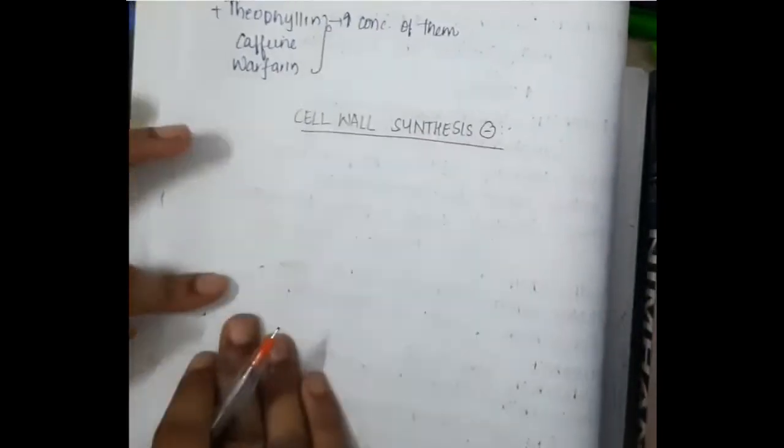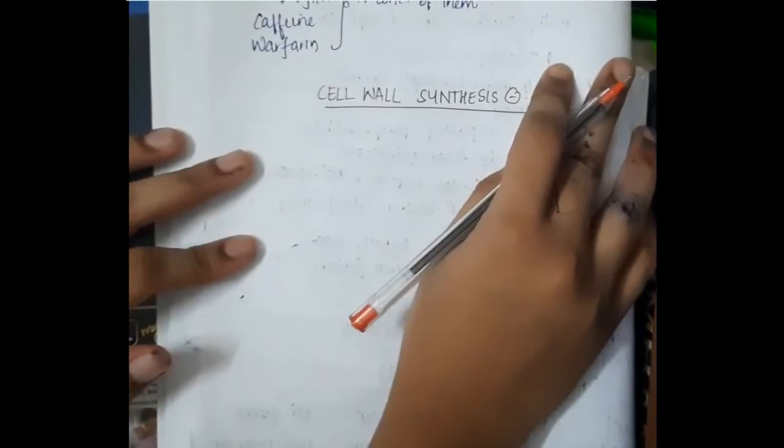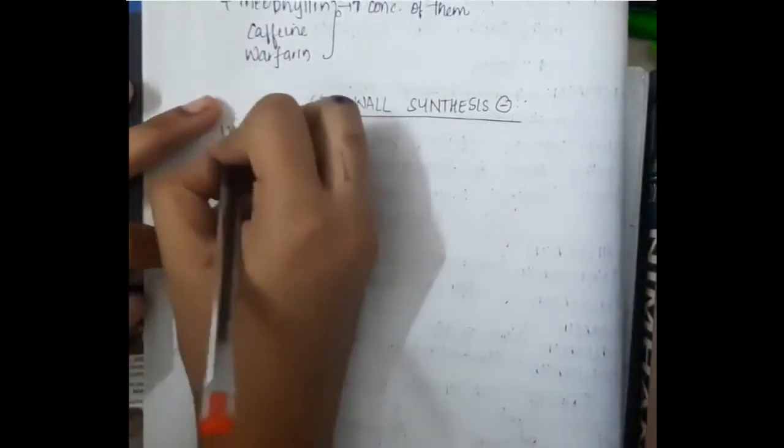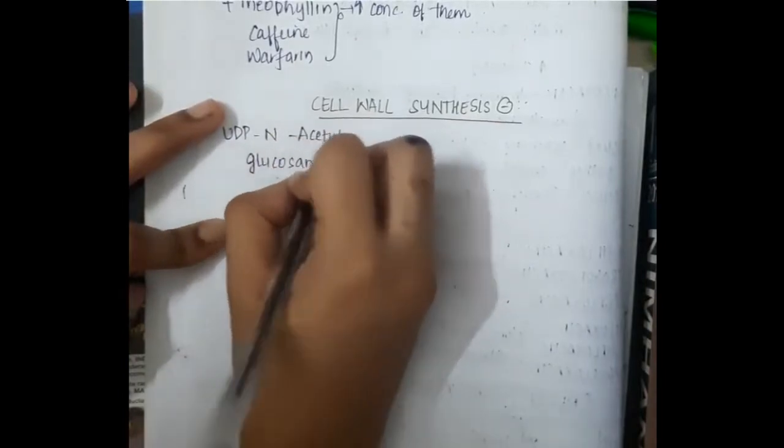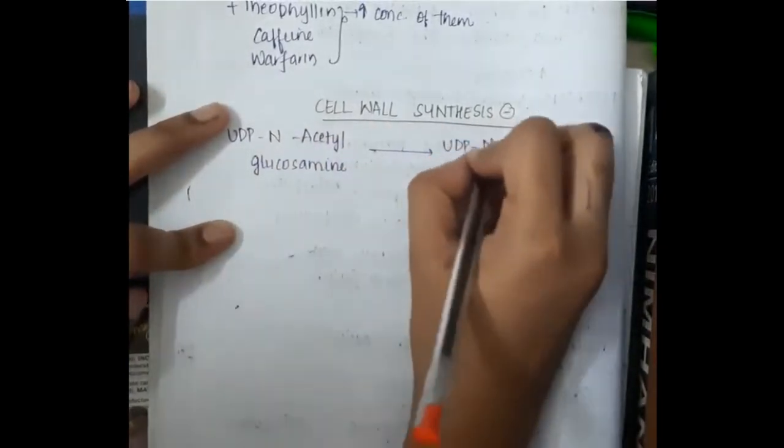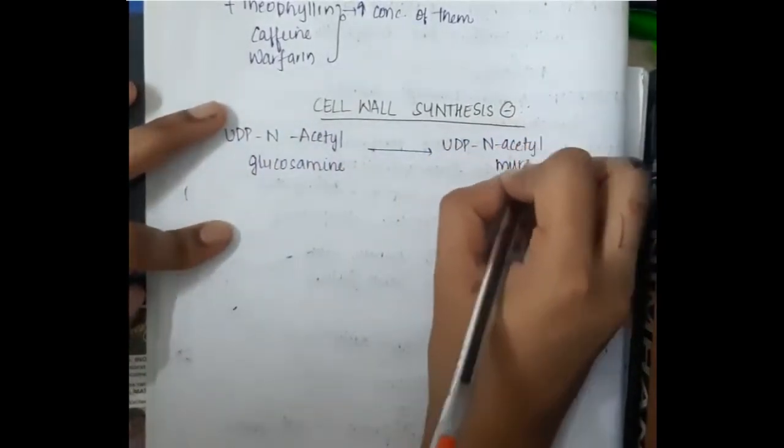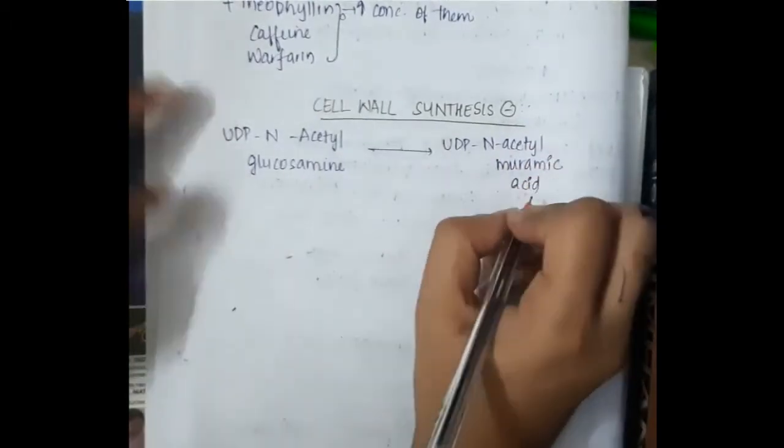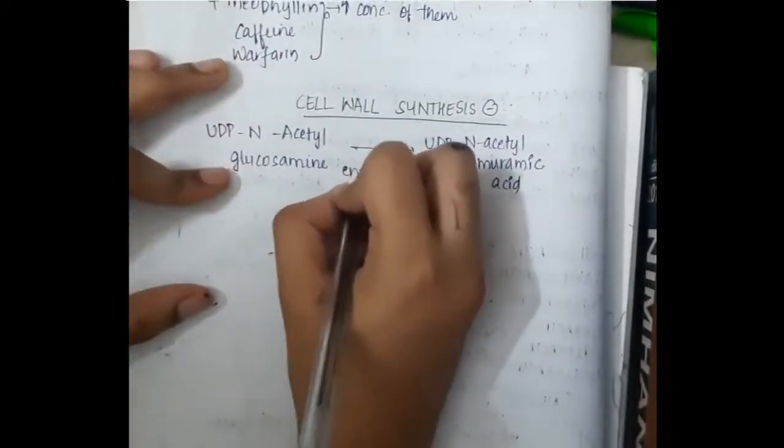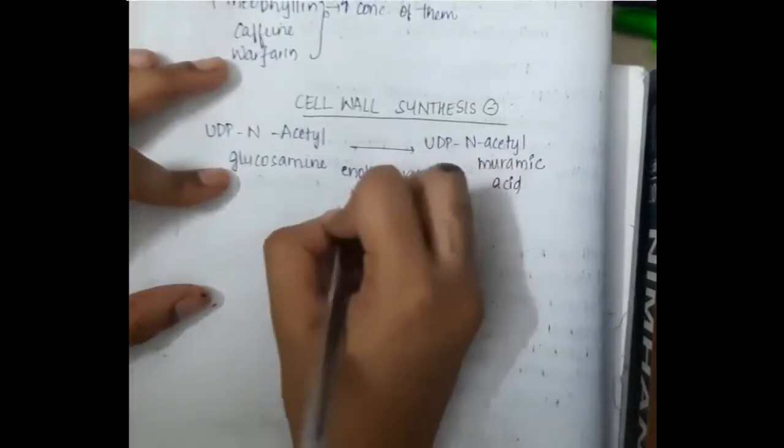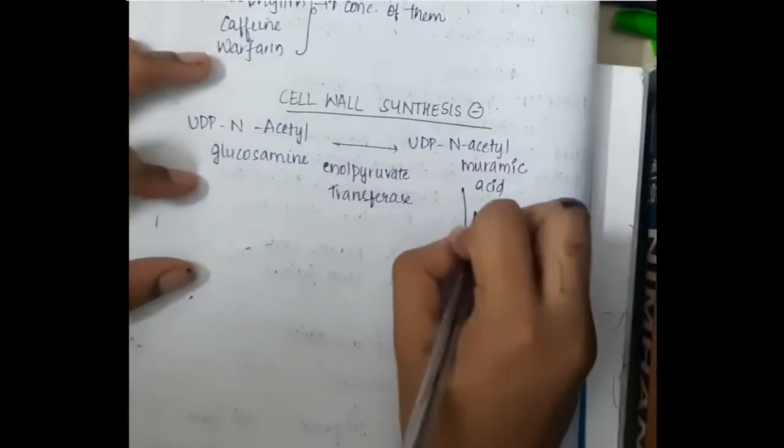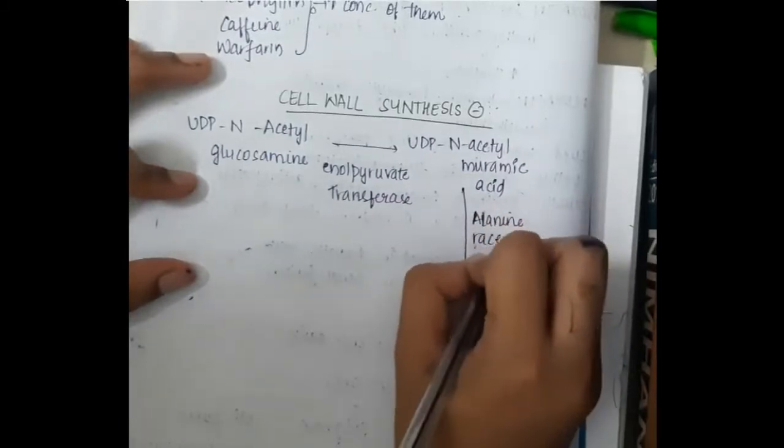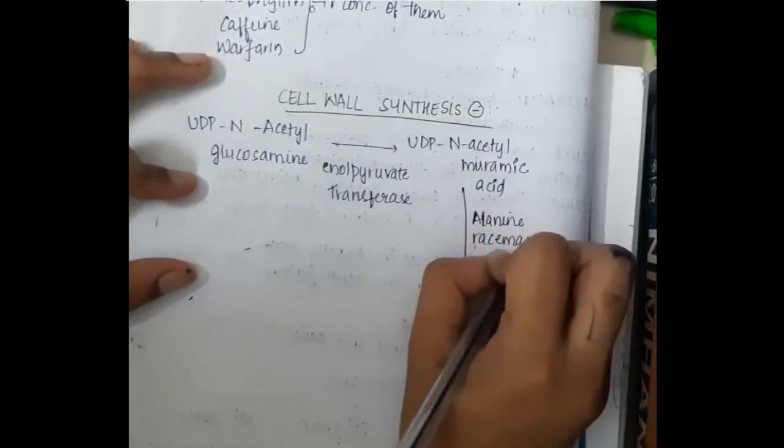First and foremost there is UDP-N-acetylglucosamine. This UDP-N-acetylglucosamine gets converted to UDP-N-acetylmuramic acid in the presence of the enzyme enolpyruvate transferase.